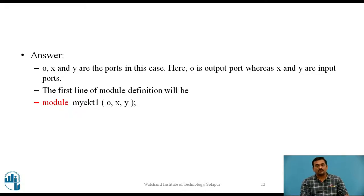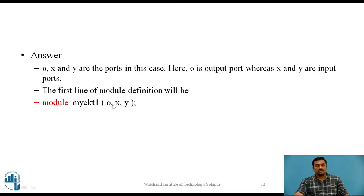The first line of the module definition is written with the module keyword followed by the name of the module — in this case myCircuit1, though you can use another name. This is followed by, in brackets, the list of ports: O is the output port written first, followed by the input ports X and Y.